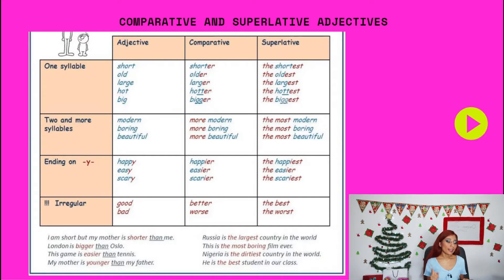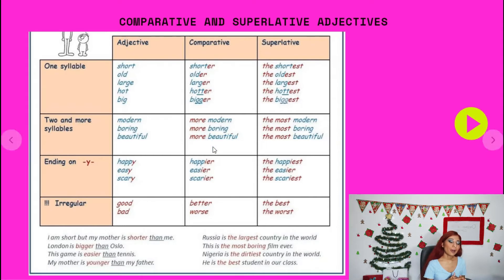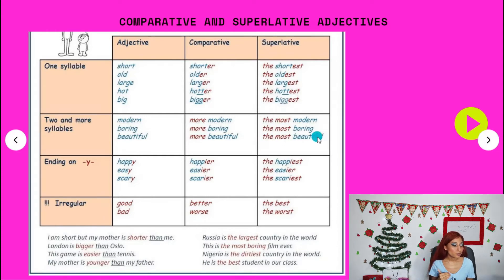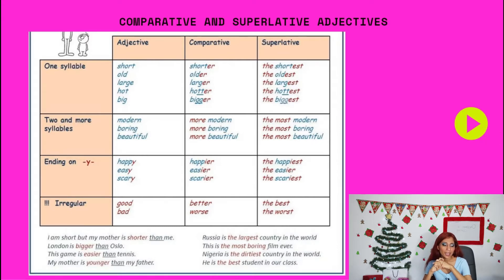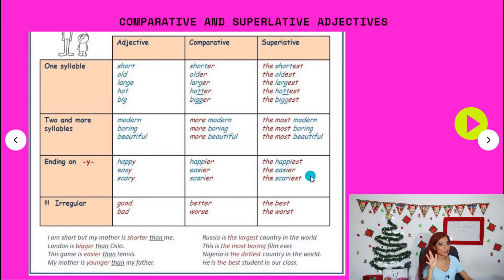What happens when you have an adjective of two syllables or more — like modern, boring, beautiful, amazing, dangerous? You use 'more' for the comparative: more modern, more boring, more beautiful. For the superlative, you use 'the most': the most modern, the most boring, the most beautiful. And if the adjective ends in -Y, like happy, easy, or scary, you drop the Y and add -ier for comparative: happier, easier, scarier; or -iest for superlative: the happiest, the easiest, the scariest.